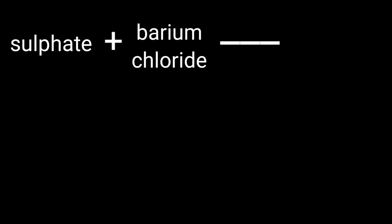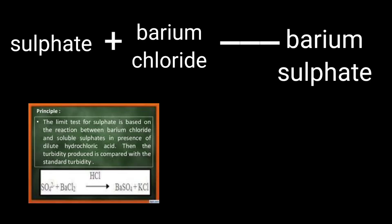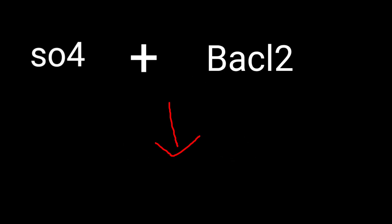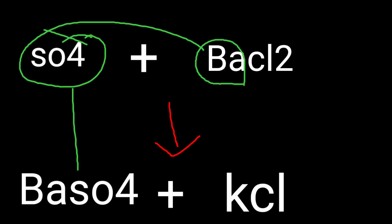The next topic is the Limit Test for Sulphate. The principle is that sulphate reacts with barium chloride, and barium sulphate is formed. The formula is: SO4 plus BaCl2 gives BaSO4 plus KCl. SO4 plus BaCl2 is formed, and SO4 is formed.